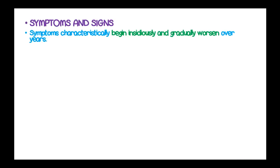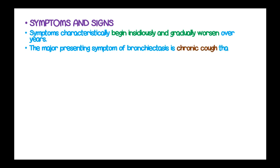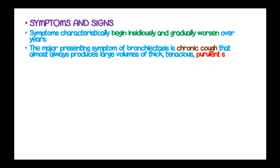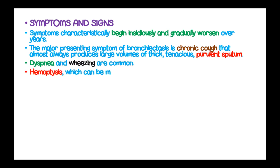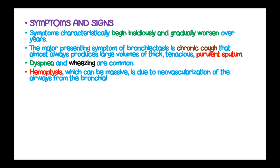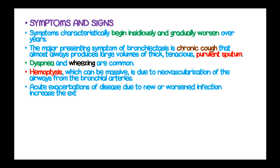Symptoms characteristically begin insidiously and gradually worsen over the years. The major presenting symptom of bronchiectasis is a chronic cough that always produces large volumes of thick, tenacious, purulent sputum. Dyspnea and wheezing are common. Hemoptysis, which can be massive, is due to neovascularization of the airways from the bronchial arteries.